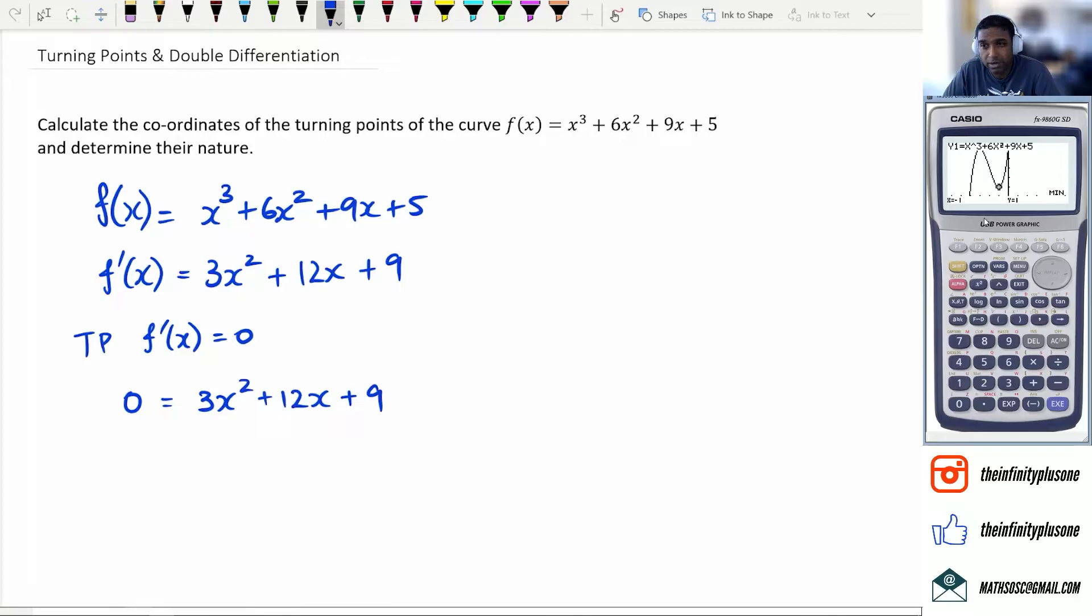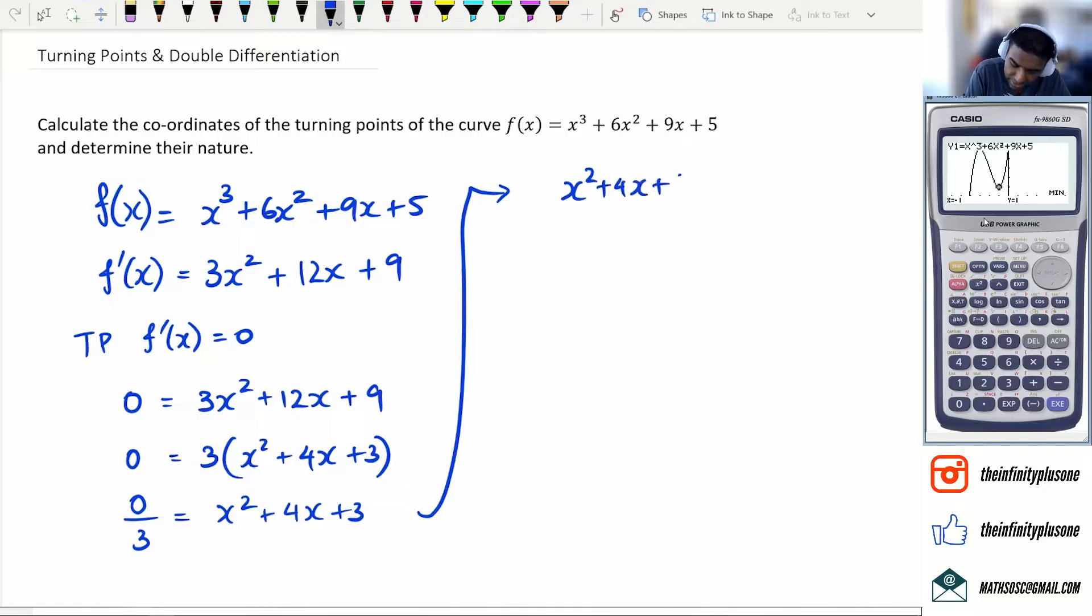Now, at this point, if your quadratic is not nice, you could always use the calculator to put it in the quadratic formula and get the 2x values. But this particular equation is fairly nice because I can actually factorize this as x squared plus 4x plus 3. And then I get rid of the 3 on the left-hand side, which means I'm going to end up with x squared plus 4x plus 3 equals 0. So I need to factorize this quadratic, and it's going to nicely factorize to x plus 3 and x plus 1.